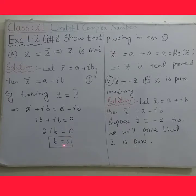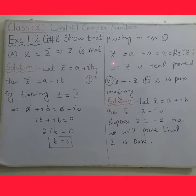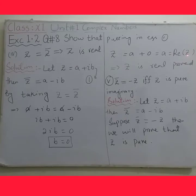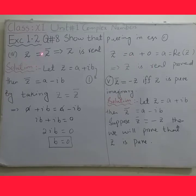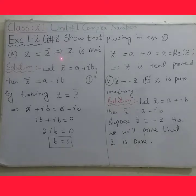Now putting b equals 0 into equation 1, where z equals a plus iota b: z equals a plus iota(0) which gives z equals a. We know that in any complex number, a represents Re(z). So z equals a, which is a real number. This means z represents only a real number when z equals z conjugate. Thus it is proved that if z equals z conjugate, then z is real.